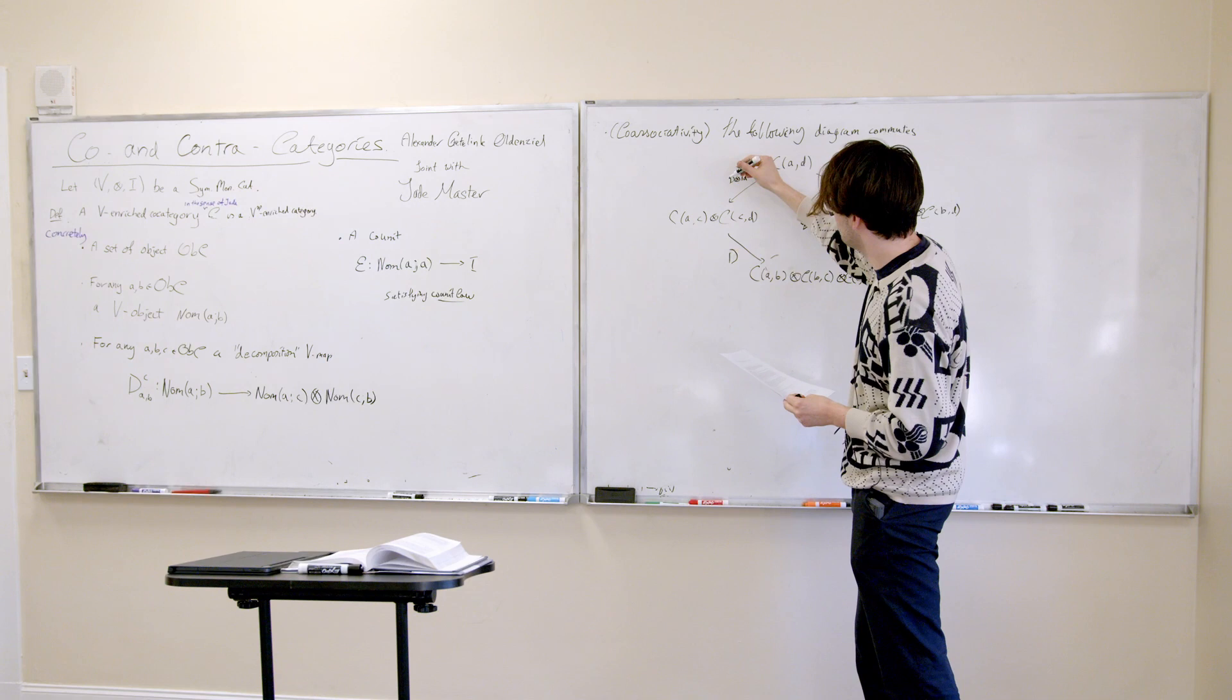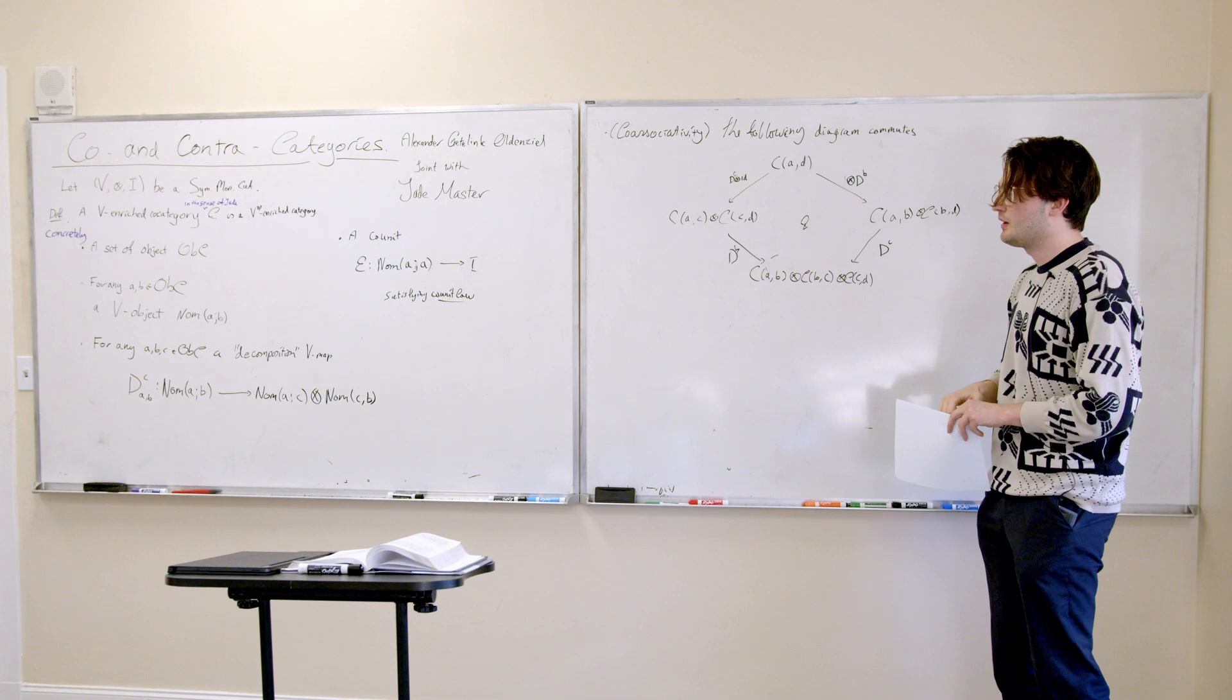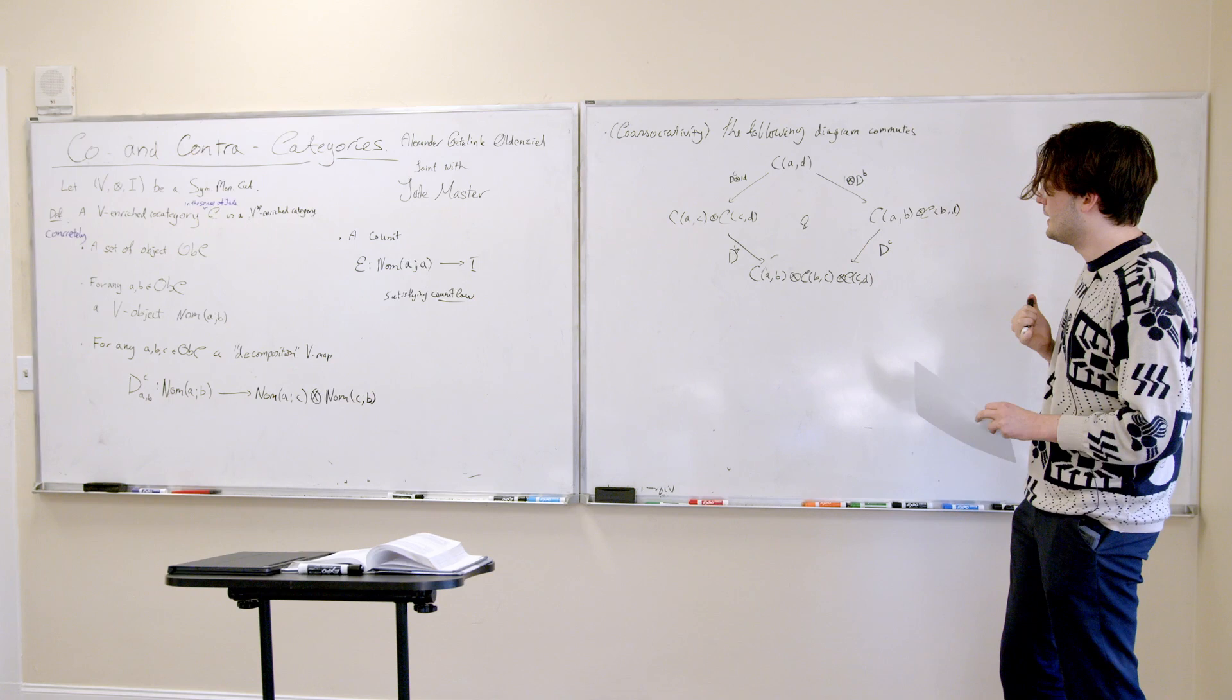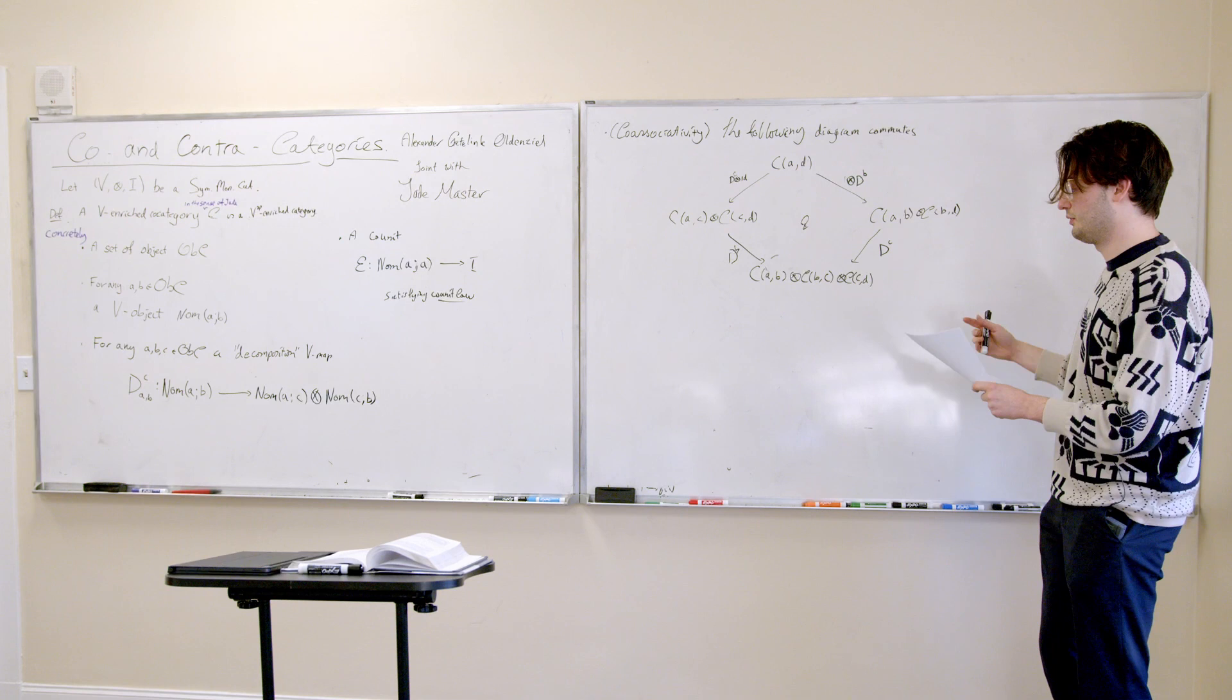There's a co-unit map and the following diagram has to commute. It says that two different ways of decomposing are the same. If I first decompose on C, then these decompositions have to be the same. This condition is an interesting condition. It doesn't hold for all notions or all informal conceptions of decomposition.